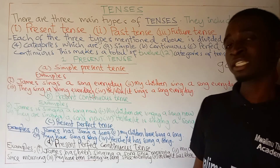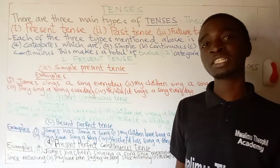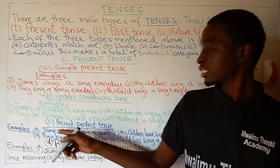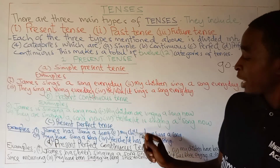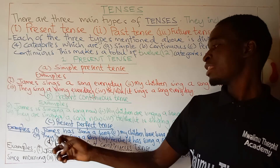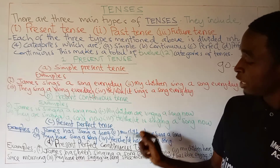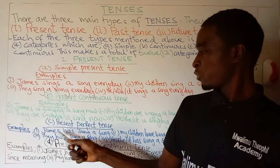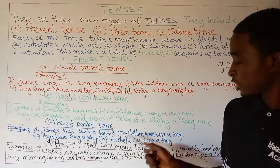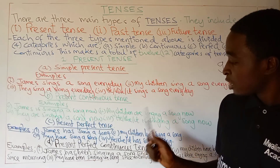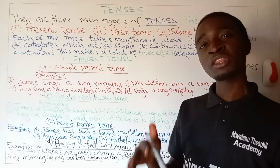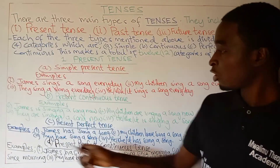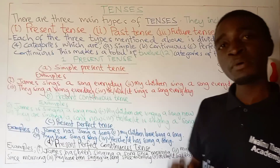Let us see the third category of present tense. This is present perfect tense. In present perfect tense we use the helping verb has or have. For example, the first sentence is: James has sung a song. Number two: my children have sung a song. Number three: they have sung a song. Number four: he or she or it has sung a song. When we are dealing with a single name or a pronoun he, she, or it, the helping verb used is has. But when we are dealing with pronouns like they or we, or names which are in plural, we use the helping verb have.